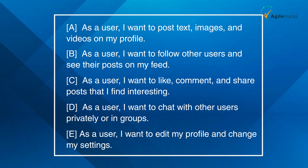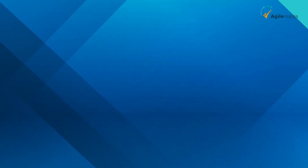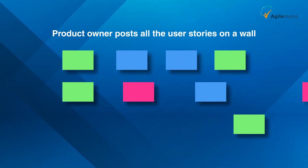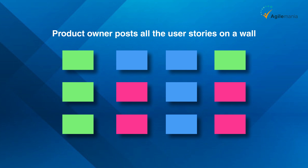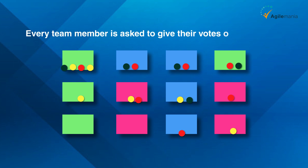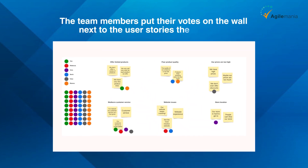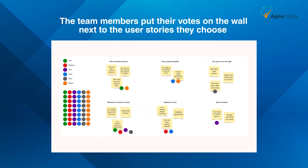The team wants to estimate these user stories using dot voting. Here are the steps they follow. First, the product owner posts all the user stories on a wall. Next, every team member is given four to five votes — these can be small round sticky notes or dots. Every team member is then asked to give their votes on the stories they think are bigger or more important. They can vote more than once for one story if they want, and they put their votes on the wall next to the user stories they choose.